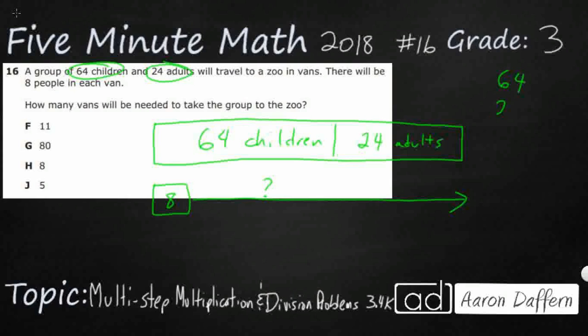64 children, 24 adults, simple addition problem. Oh, there we go. That's 88.